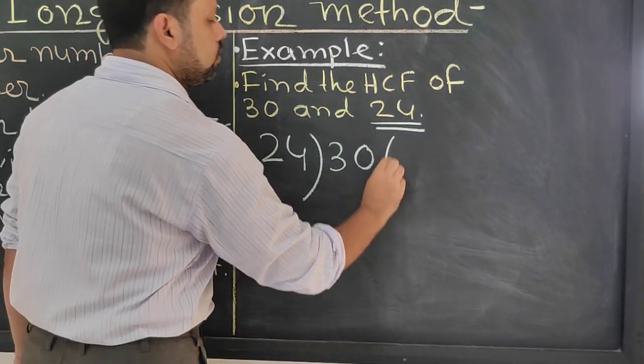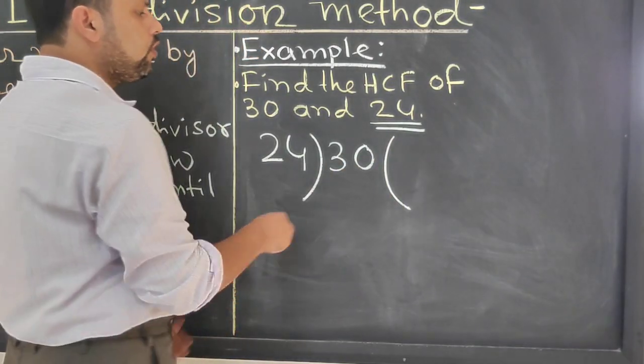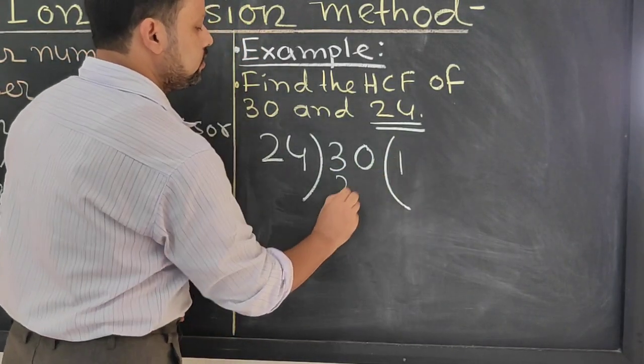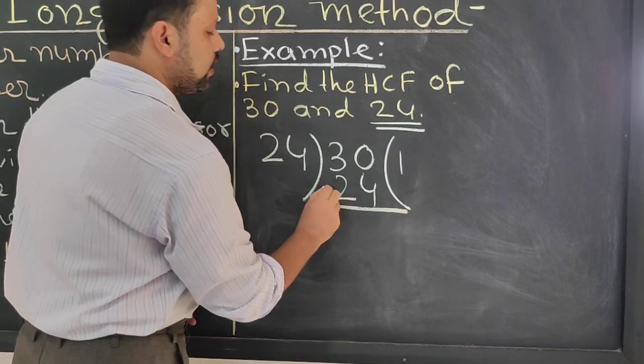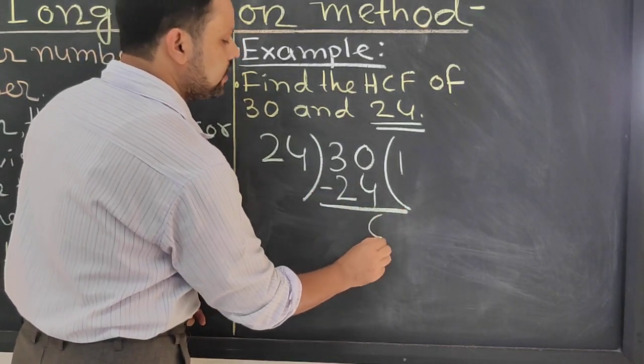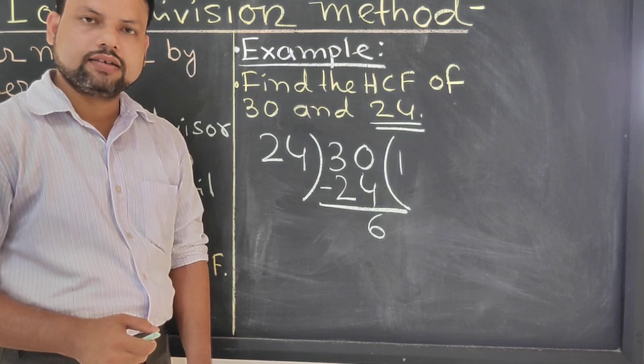30 divided by 24. Then 24 times 1, that's 24. Now subtract this. Then you will get 6 as remainder.